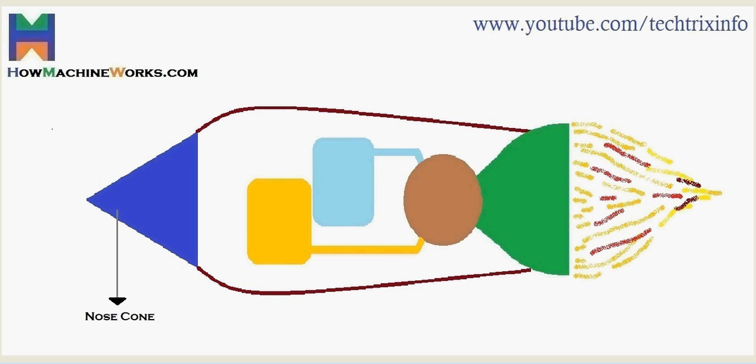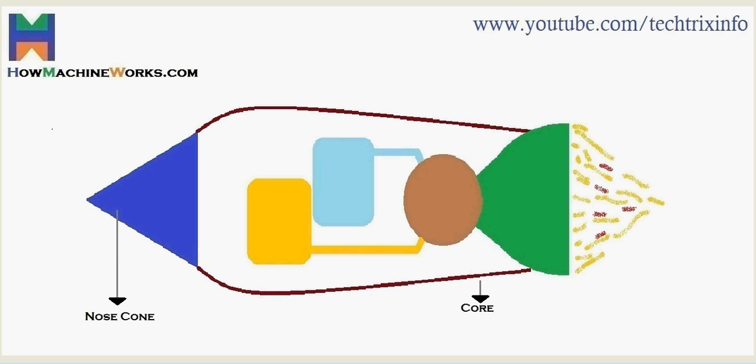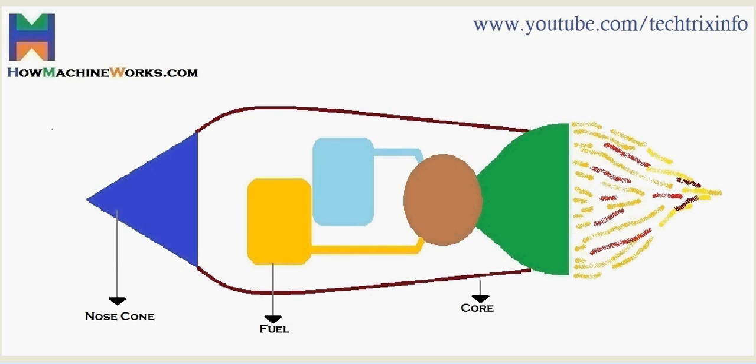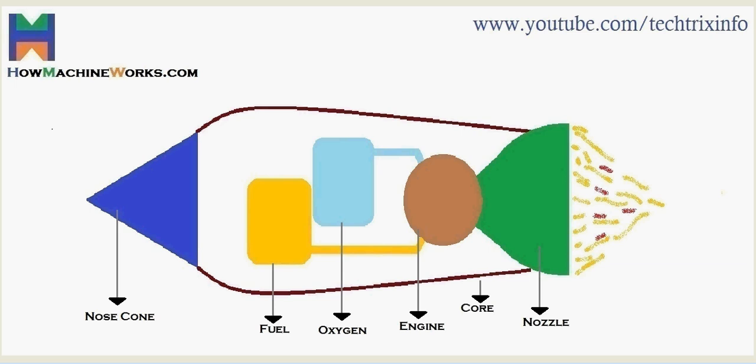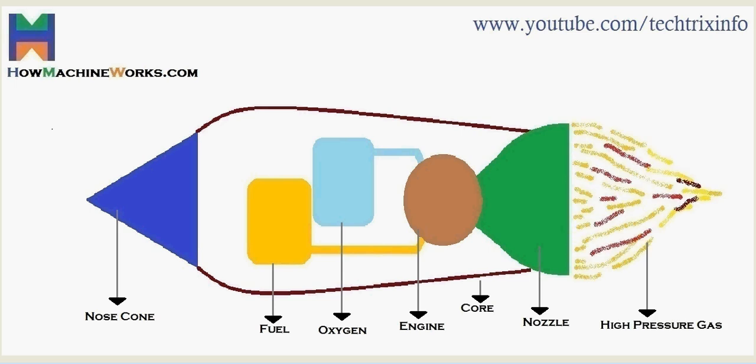Let's identify the components. That's the nose cone of the rocket. That's the core, and we have the fuel stored inside, the oxygen cylinder, and that's our engine. We have the nozzle at the rear where high-pressure gas is ejected outside.